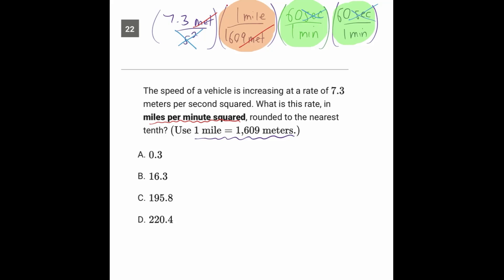So the unit that remains is miles on the top and minutes squared on the bottom. Miles per minute squared. Perfect. And this whole process guides us through whether we should be multiplying or dividing or doing both. In the numerator, we have 7.3 times 60 times 60, and in the denominator, we have 1,609. Let's throw that into the calculator.